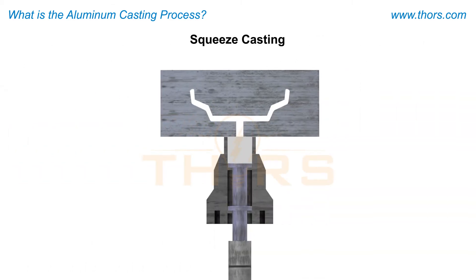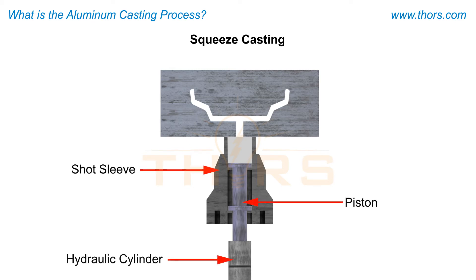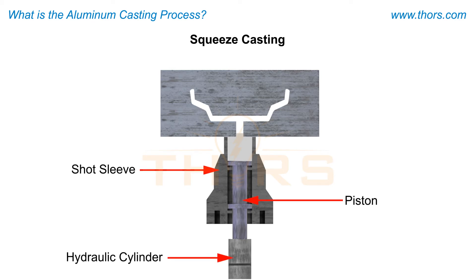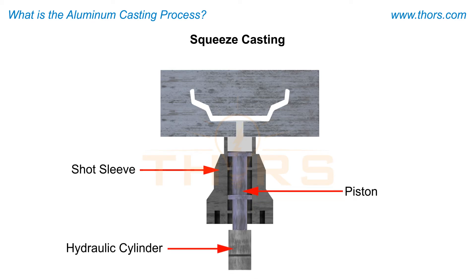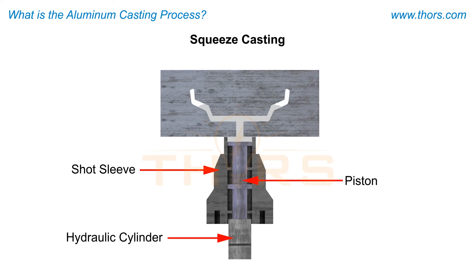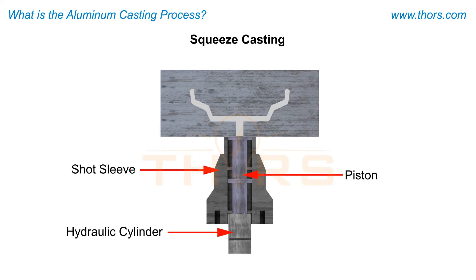Squeeze casting consists of a shot sleeve, a piston, and a hydraulic cylinder that pushes the molten metal into the molds under high pressure.